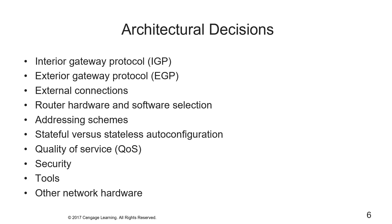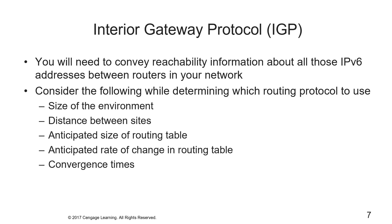You're going to have to make architectural decisions regarding the following items: your interior gateway protocol (IGP), your exterior gateway protocol (EGP), your external connections, router hardware and software selection, addressing schemes, stateful versus stateless autoconfig, QoS, security, tools, and other network hardware such as firewalls and load balancers.